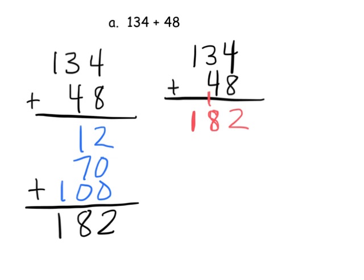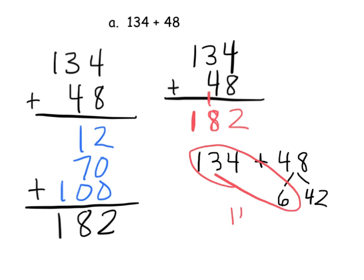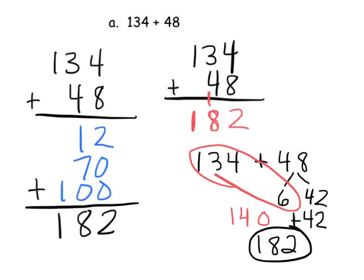I've seen students use number bonds here — here's another way, a kind of decomposition. For example, I've seen students take 134 and notice they need 6 more to reach the next decade. So we break 48 up into 6 plus 42. Then 134 plus 6 is 140, plus 42 gives us 182. There are a lot of ways that students can use to solve this problem — just let the students go to town.